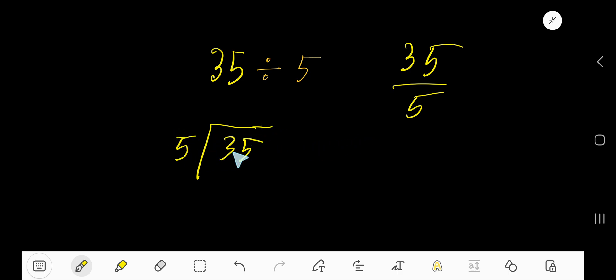Okay, 5 goes into 3 how many times? 0 times since 3 is less than 5. 0 times 5 is 0. If you subtract, then you are getting 3. Bring down this 5, 35.